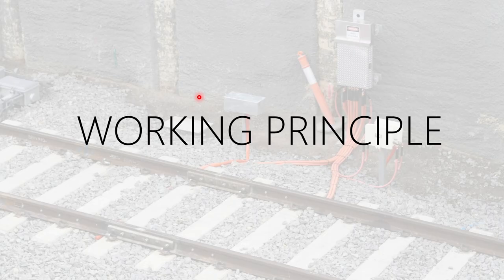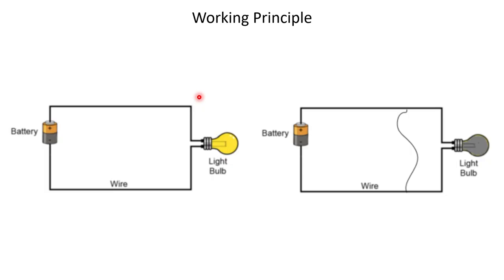Now, what's the working principle? This is probably the first circuit that you would have studied in electricity. Track circuits also work exactly on that principle — if you connect a battery through wires to a bulb, that would light up the bulb. And if you were to short the circuit, that would extinguish the bulb.